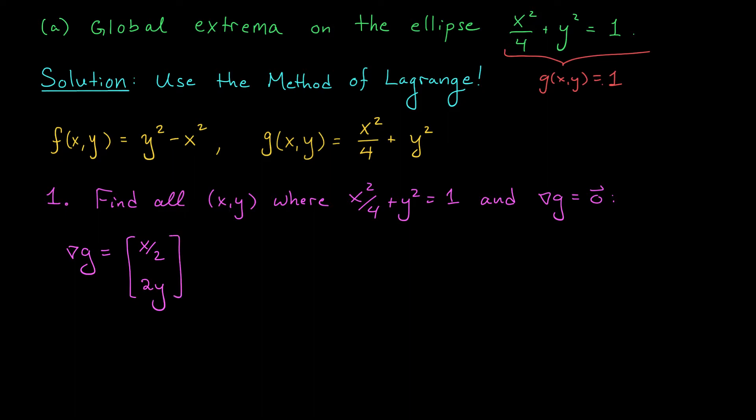Now, what would it mean for this vector to be equal to the 0 vector? Well, our first component would have to be 0, so x would be 0, and our second component would have to be 0, so y would be 0. Ah, but hold on, if both x and y are 0, then this expression, x squared over 4 plus y squared,